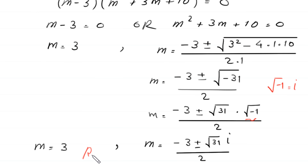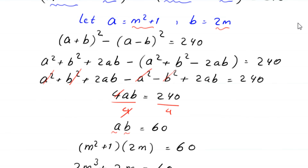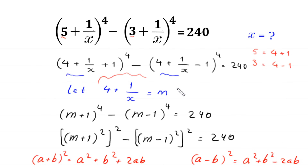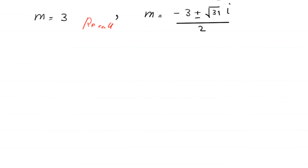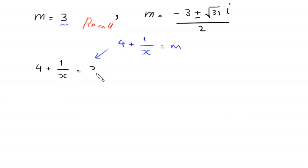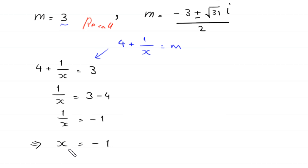Now, recall that we supposed 4 + 1/x = m. Substituting m = 3: 4 + 1/x = 3, so 1/x = 3 - 4 = -1, which implies x = -1. This is the first solution of this equation.